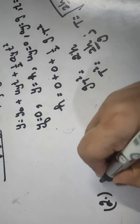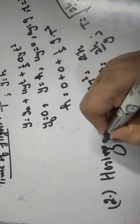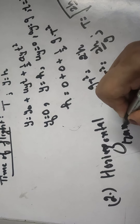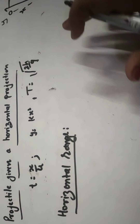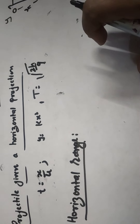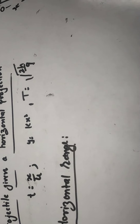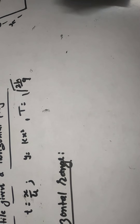The second case is to find out horizontal range. Horizontal range is the distance traveled by the projectile during its flight — the distance R covered by the particle along the horizontal direction.